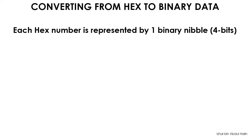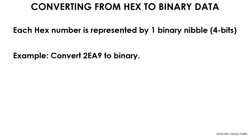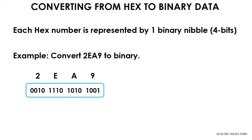Let us now see how a hexadecimal number is written in its binary equivalent form. Conversion is done one nibble at a time — one nibble is defined as a 4-bit binary number. Consider the example: the number to be converted is 2EA9. Starting from the MSB: 2 in 4-bit binary is 0010, E is 1110, A is 1010, and 9 is 1001. A 4-digit hex number is thus converted to a 16-bit binary number, since one hex digit is represented using a 4-bit binary number.